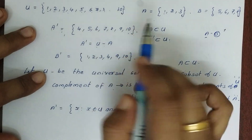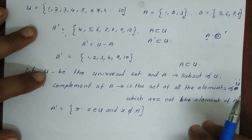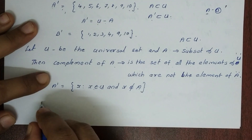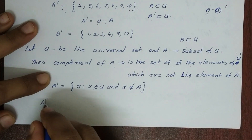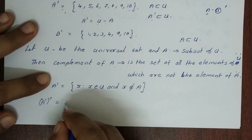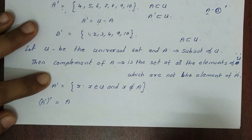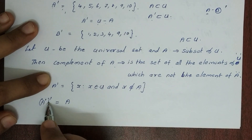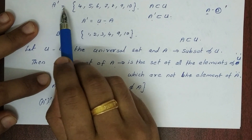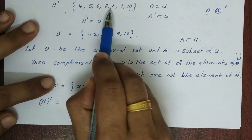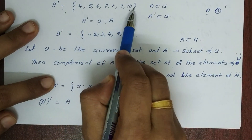That is not in doubt. Now let's write a property of A complement. A complement complement — that is, the double complement of A — is A itself. A complement is {4, 5, 6, 7, 8, 9, 10}.